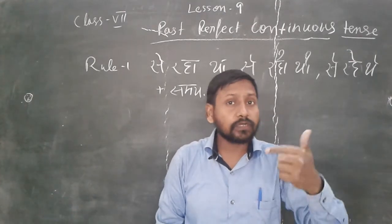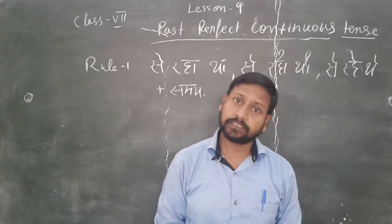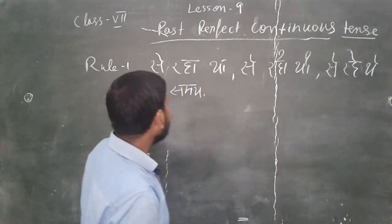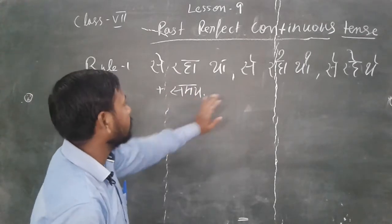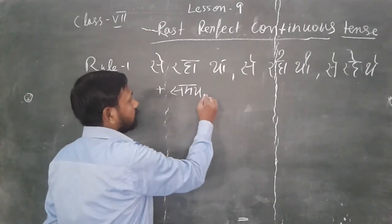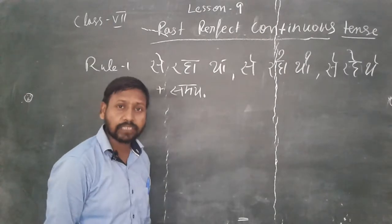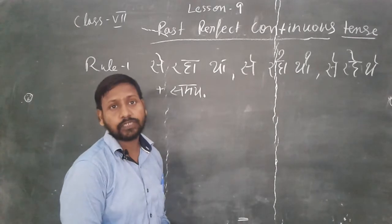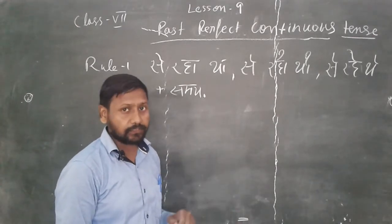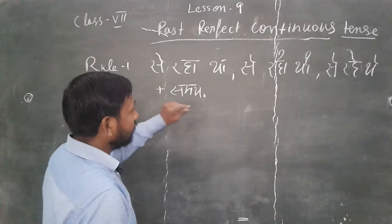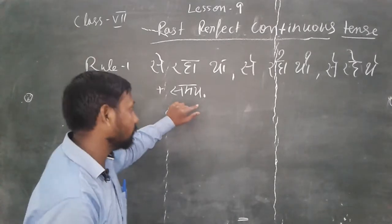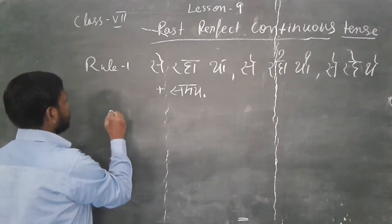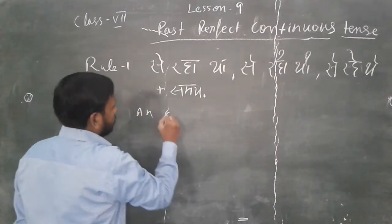An action which is going on continuously in the past with time — that is called past perfect continuous tense. In Hindi, the time will definitely be present here. Without time, if you translate any sentence, it will be included in the past continuous tense. When you add time, it separates from past continuous and becomes past perfect continuous tense.